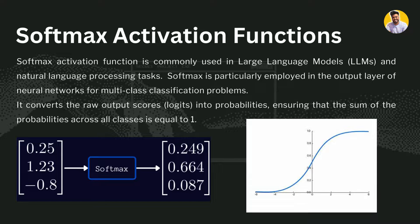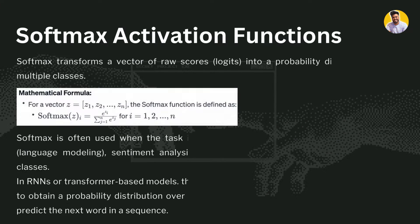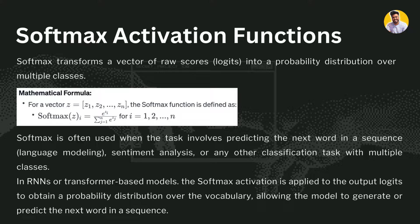The softmax activation function is also used in predicting the next word in large language model tasks, doing sentiment analysis, and various other multi-class classification problems. In transformer-based models, the softmax function is applied on the output logits of the hidden layers, transforming them into a probability distribution in the output layer so you know which word has the highest probability — that is your output.